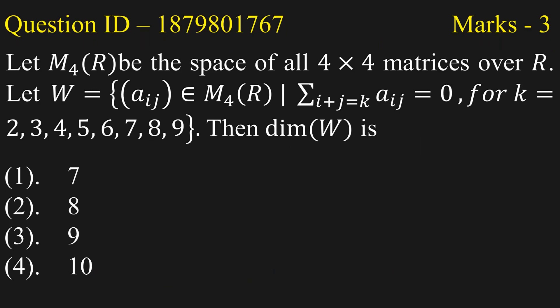Question is: Let M4(R) be the space of all 4×4 matrices over R. Let W = {(aij) ∈ M4(R) | Σ(i+j=k) aij = 0, for k = 2, 3, 4, 5, 6, 7, 8, 9}. Then dim(W) is: option 1, 7; option 2, 8; option 3, 9; option 4, 10.